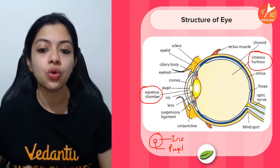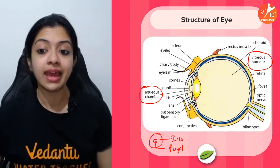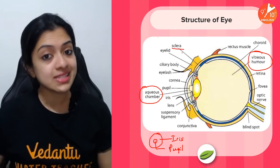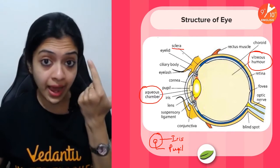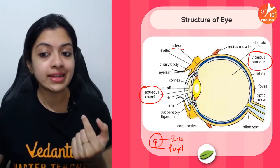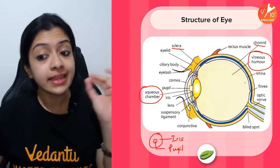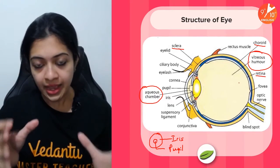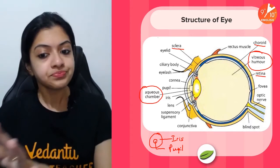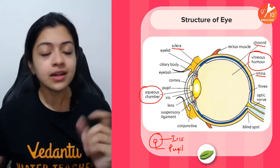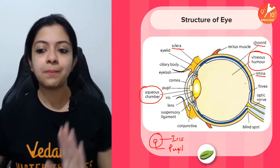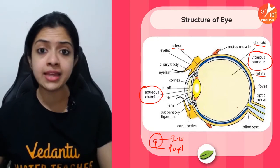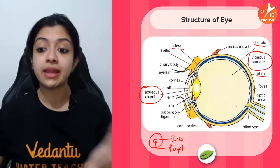The three layers of the eye you need to know are the sclerotic layer, the choroid layer, and the retinal layer. The outer sclerotic layer (sclera) is the white of your eye. Inner to that is the choroid layer, which is richly supplied with blood vessels. The innermost is the retina, where images are formed. The retina contains photoreceptor cells — rods and cones — which help in vision. Rods help in identifying dim or bright light conditions, while cones help with color vision.